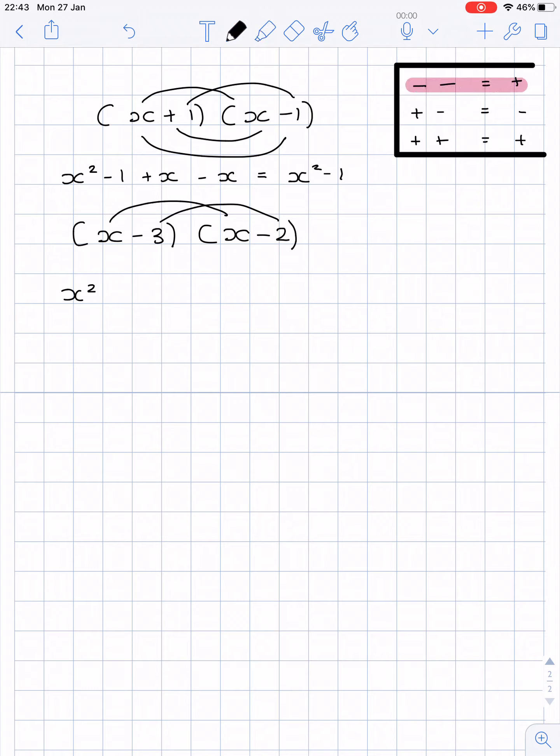So that would just be 3 times 2 which is 6. You'll then have minus 3x and minus 2x. This would give you x squared, and then you need to simplify minus 3x minus 2x which is minus 5x plus 6.